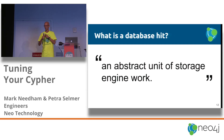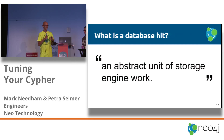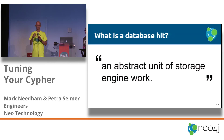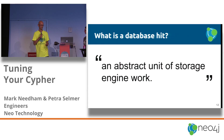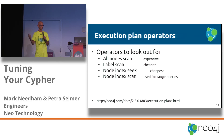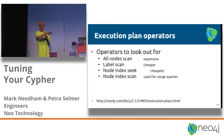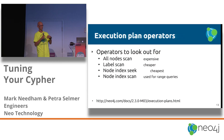So what is a database hit? It's an abstract unit of storage engine work — it could be looking up a node, looking up a property, or looking up a relationship. Roughly, if you see a query with 10 DB hits and you do the same query with 5 DB hits, the one with 5 should be faster as a rough guide. For most of the rest of the talk, we're going to look at some queries, look at the query plan, and compare them against each other applying different tips accumulated from helping people speed up their queries on Stack Overflow.